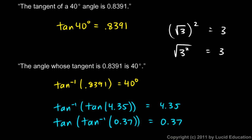Now you might be asking, what good is this? The tangent will give us the tangent of an angle. The inverse tangent will give us the angle. So the inverse tangent function is very useful for finding angles. If you're given some information, you can often find the angle using the inverse tangent. Specifically: if you know the angle, the calculator gives you the tangent of the angle. Invert that process — if you know the tangent of the angle, the calculator gives you the angle.